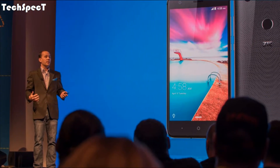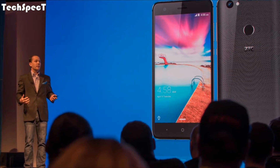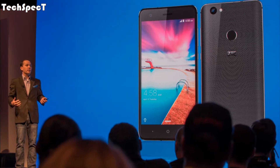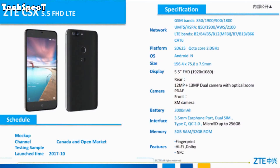Body dimensions: 154 x 76 x 7.9 mm, or 6.06 x 2.99 x 0.31 inches. SIM: dual SIM, Nano SIM, dual standby.